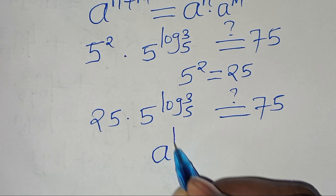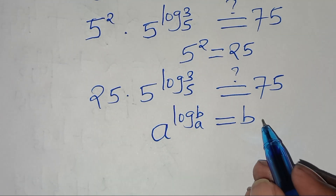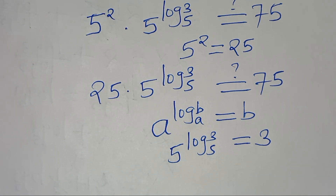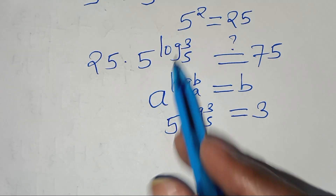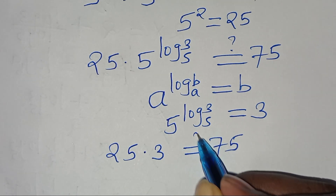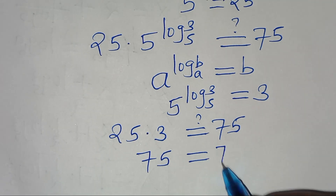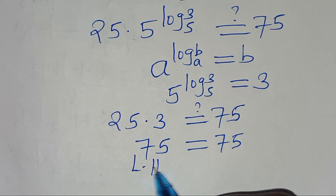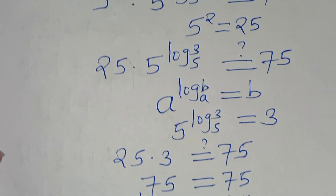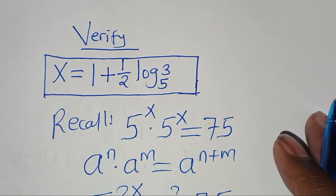So we have 25 multiplied by 5 to the power of log base 5 of 3. Since 5 to the power of log base 5 of 3 is in the form a^(log base a of b), which equals b, this gives us 3. Therefore 25 times 3 equals 75, confirming the left-hand side equals the right-hand side. This verifies that x equals 1 plus one-half log base 5 of 3 satisfies the equation.